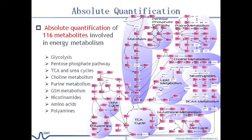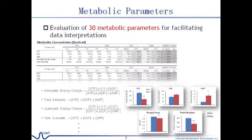Carcinoscope delivers an all-in-one analysis report. In addition to absolute concentrations of 160 metabolites, averages and standard deviations of each sample group, and p-values and statistical significances among groups, the analysis report also includes 30 metabolic parameters such as energy charge, total adenylate and guanylate, total essential and non-essential amino acids, glutathione ratio, etc., by which interpretations of the measured metabolome data will be facilitated considerably.